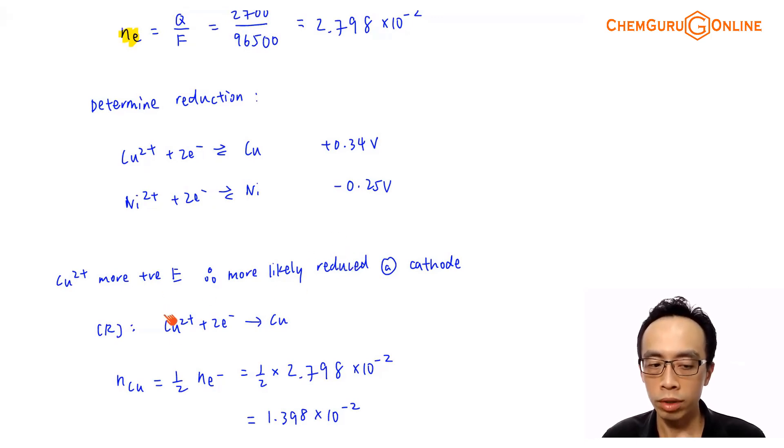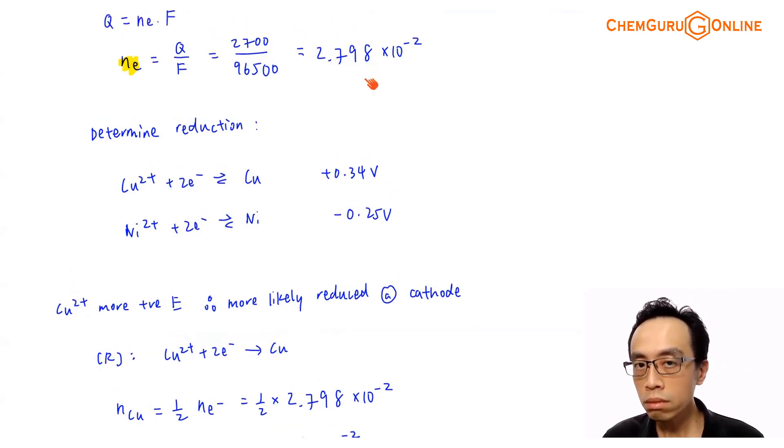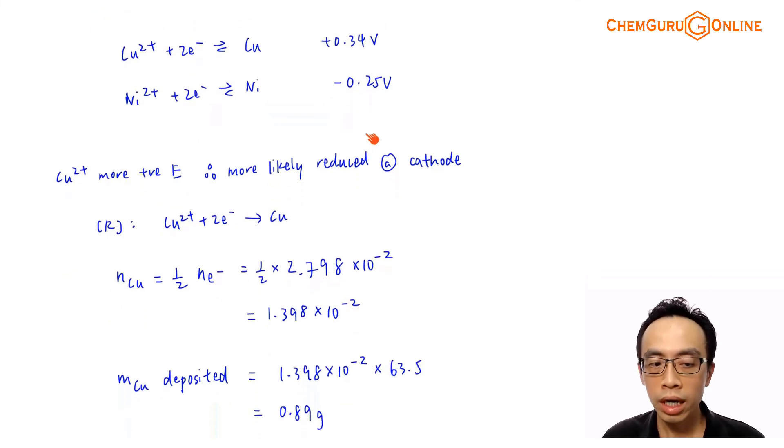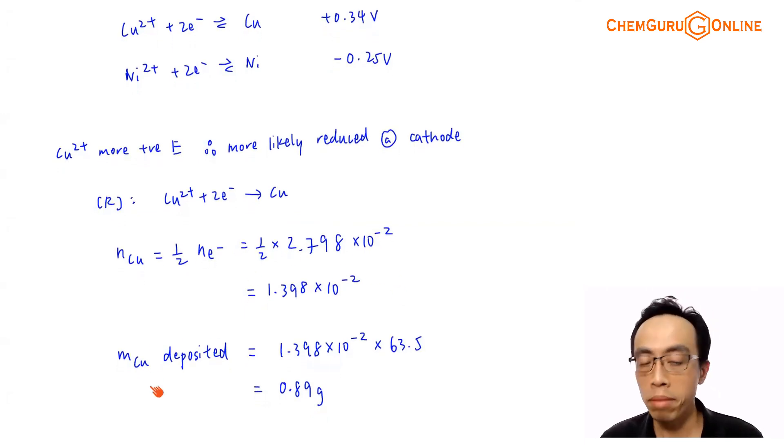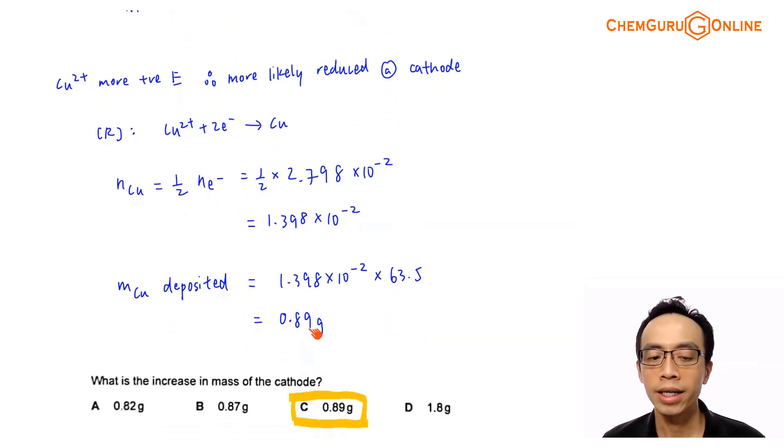Reduction at the cathode will be Cu²⁺ + 2e⁻ → Cu. Once I have the number of moles of electrons previously determined, I can compare mol ratio and find the number of moles of copper. Number of moles of copper based on the reduction half equation will be half times the number of moles of electrons, which is 1.398 × 10⁻². Once I've determined the moles of copper that is being reduced, I can calculate the mass of copper deposited at the cathode, which is the number of moles multiplied by the atomic mass for copper. This gives me a value of 0.89 gram.